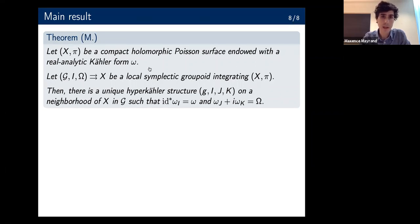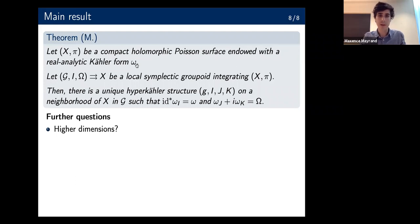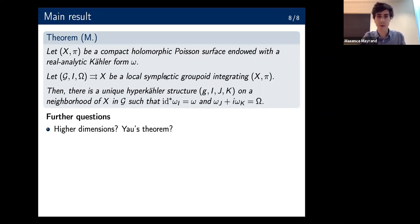That's the main result. Let me end with a couple of further questions. The obvious question is what happens in higher dimensions. There are preliminary computations indicating that we cannot choose the Kähler form freely — we have to choose a specific one, or at least a subset of Kähler forms which will work. But for the two extreme cases of the zero Poisson structure and the non-degenerate Poisson structure, this works. In the case of the non-degenerate Poisson structure, the form that works is the one given by Yau's theorem.